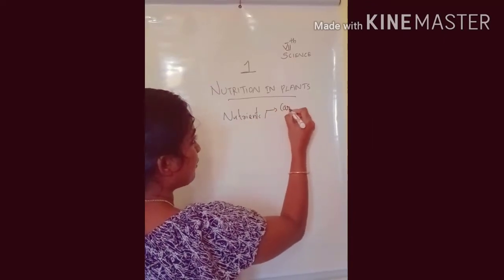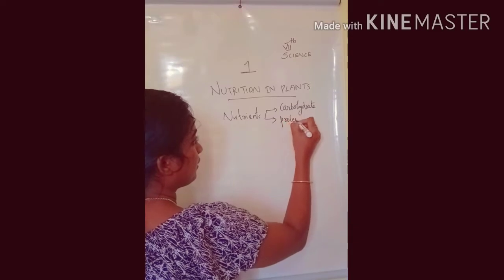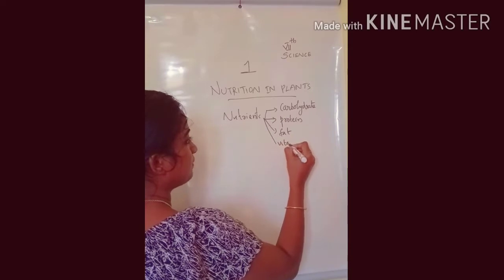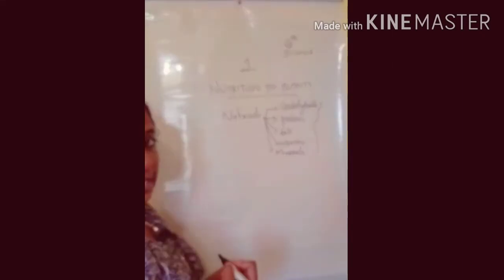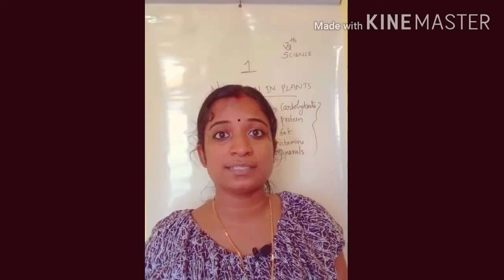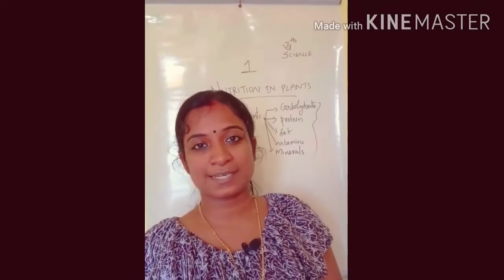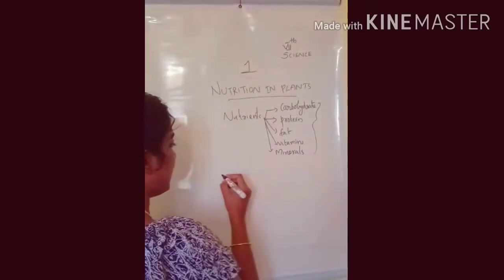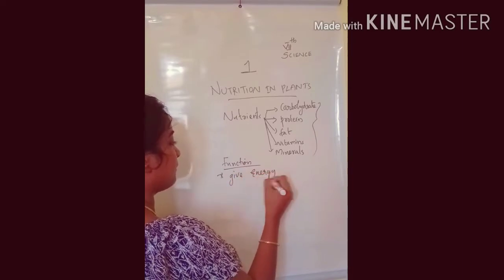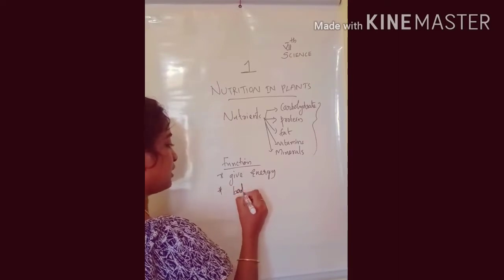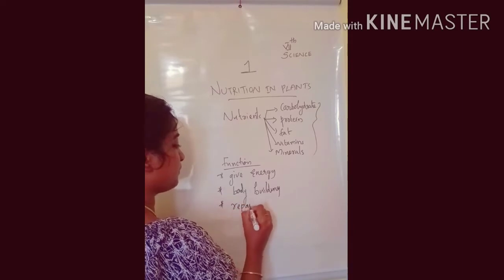In 6th standard you learned that nutrients are carbohydrates, proteins, fat, vitamins, and minerals. These are the important nutrients that should be present in our body. In 6th standard you also learned what diseases occur due to the lack of these nutrients. The functions of nutrients are: they help to give us energy, and they help to build our body — that means body building.